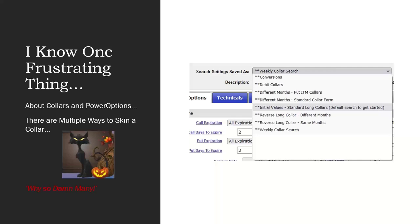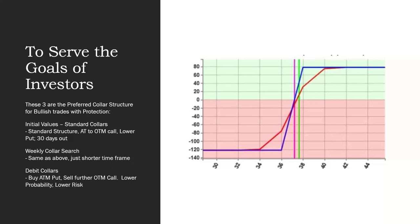Now, I know one frustrating thing that investors and Power Options users might find about the collar spreads and our collar searches, because there are multiple ways to skin a collar. Why are there so damn many seven, eight different default collar searches on Power Options? And the reason is to serve the goals of investors. The standard collar structure is what you're going to see. It's a bullish expectation. It's not neutral to bullish necessarily. It is a little bit more bullish. I want the stock to move up and then stay where it is after it moves up. The initial values default search, standard collars, is a standard collar structure we're talking about. Selling the at or out of the money call, buying a lower strike put 30 days out. Now, the weekly collar search is the same structure as above as we saw with FCX, just in a shorter time frame.